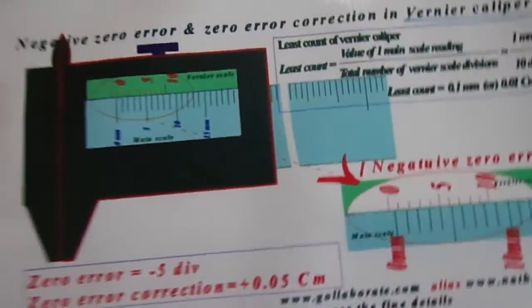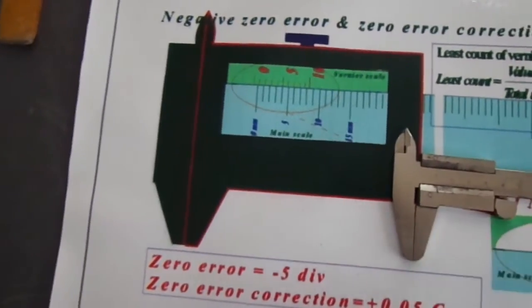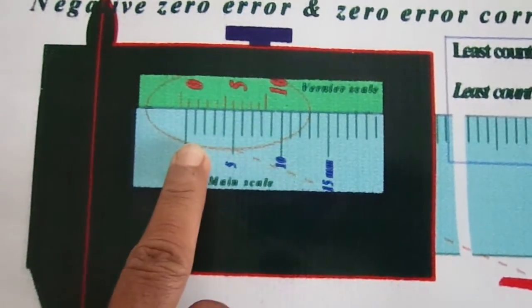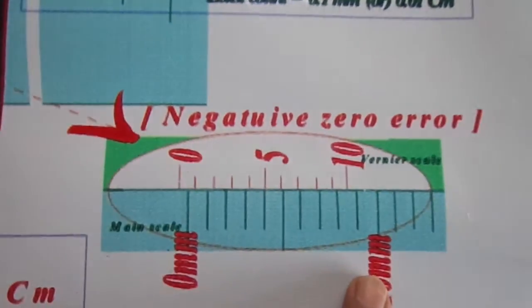Now you see here this is the Vernier caliper and the two jaws are in contact. When the two jaws are in contact, I look at the main scale and Vernier scale, and it is zoomed and shown over here.